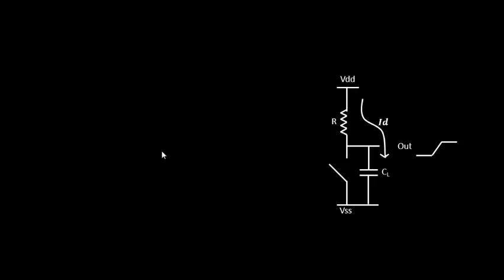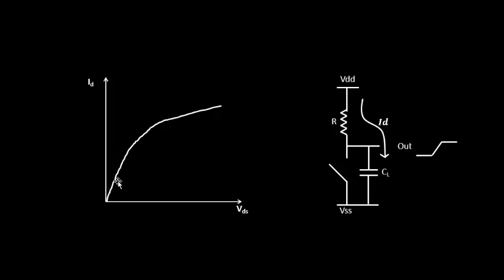In a normal Ohm's law characteristic, resistance is pretty linear. If you plot current on the X axis and voltage on the Y axis, resistance remains constant. But in the case of a MOSFET transistor, if you plot drain current on the Y axis and voltage on the X axis, a normal linear case would give a straight line — but for a transistor, the waveform looks different. The current increases with drain voltage, but at some point it saturates.